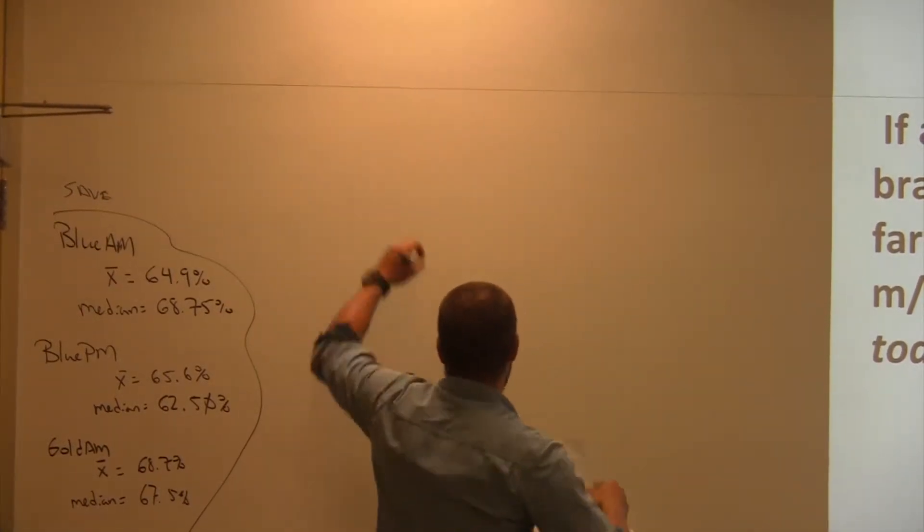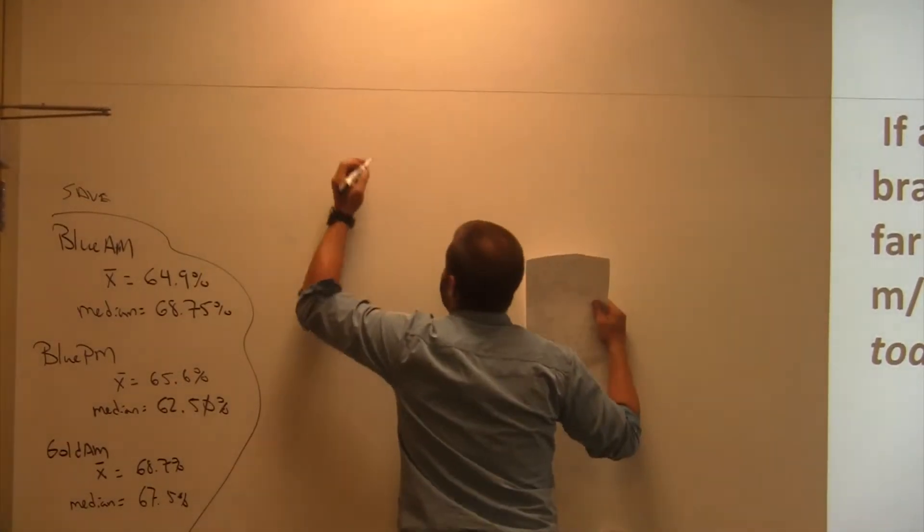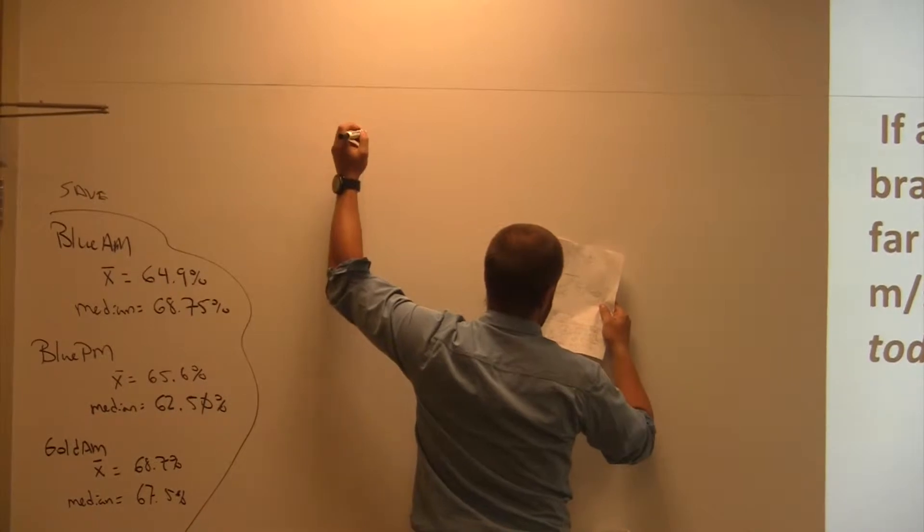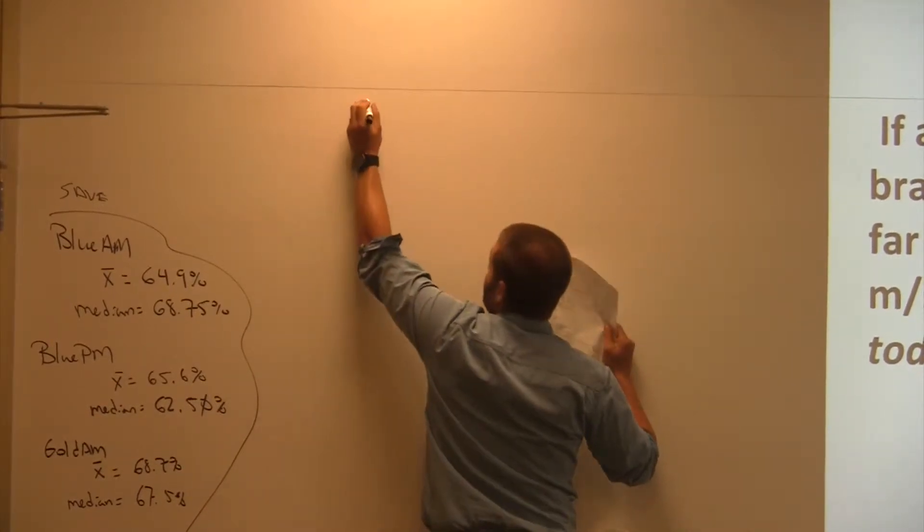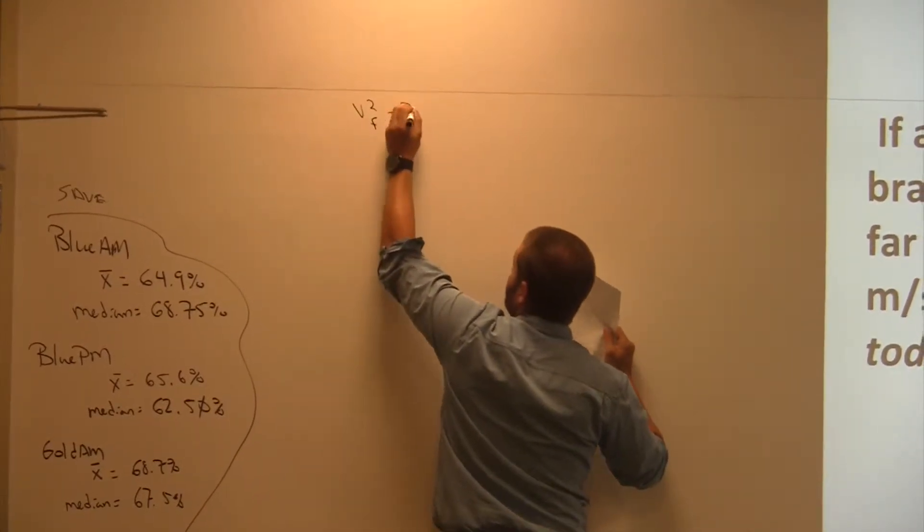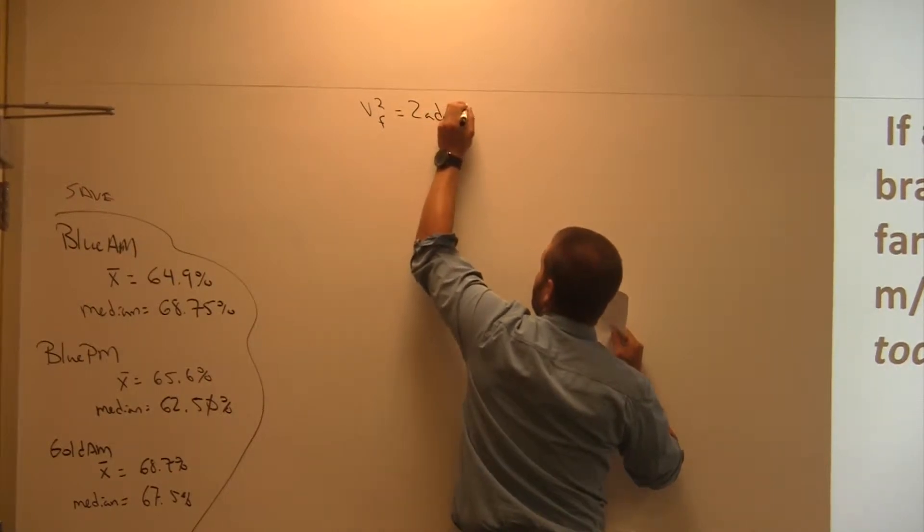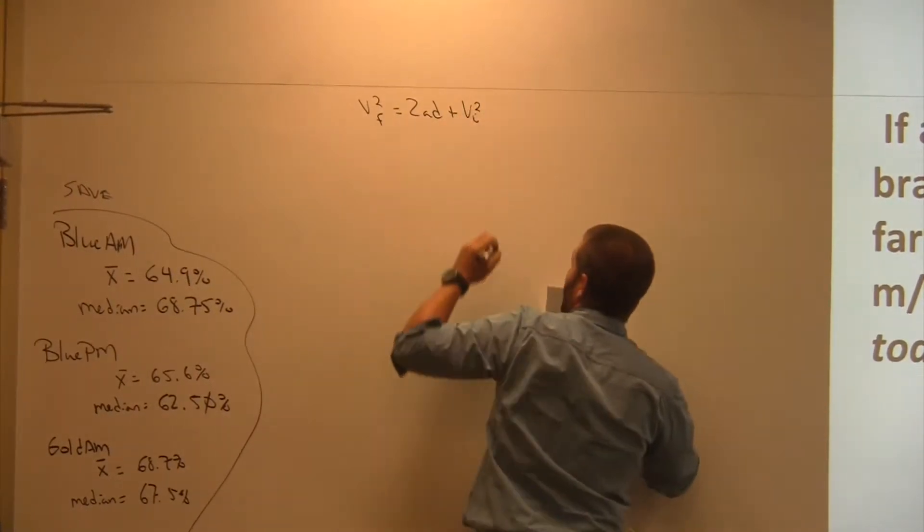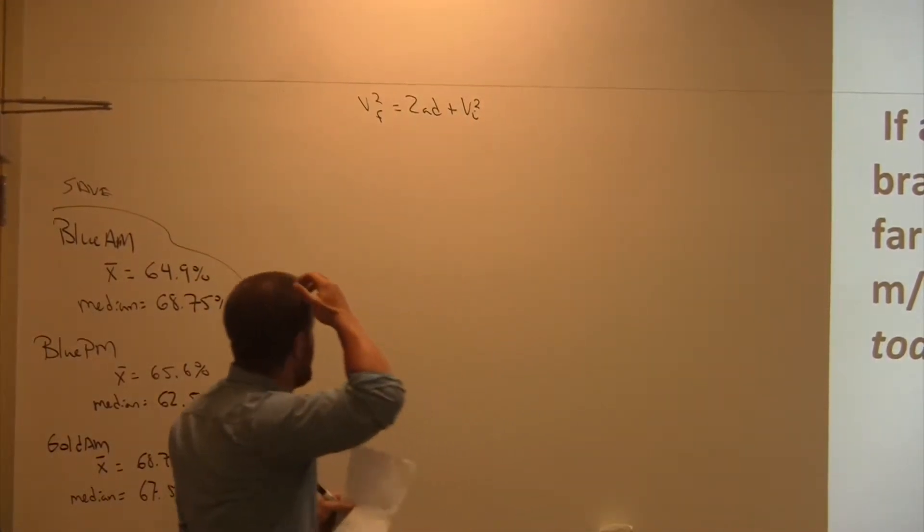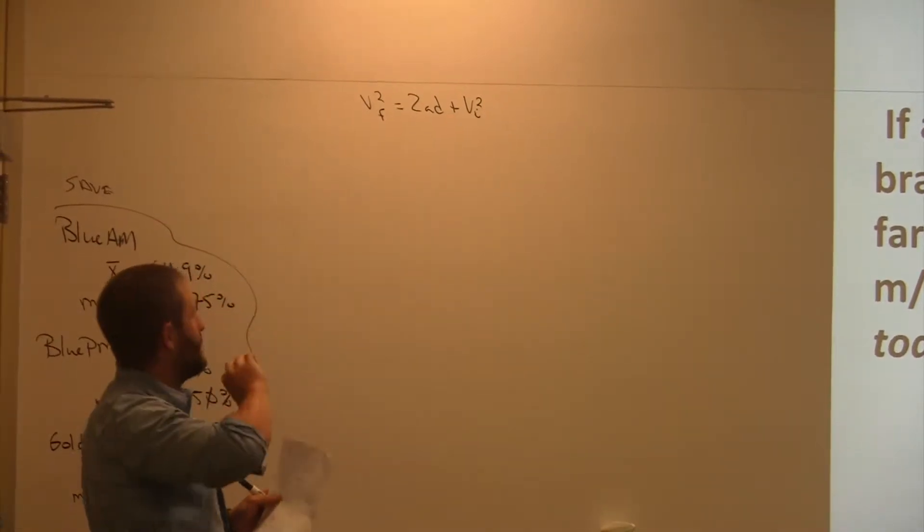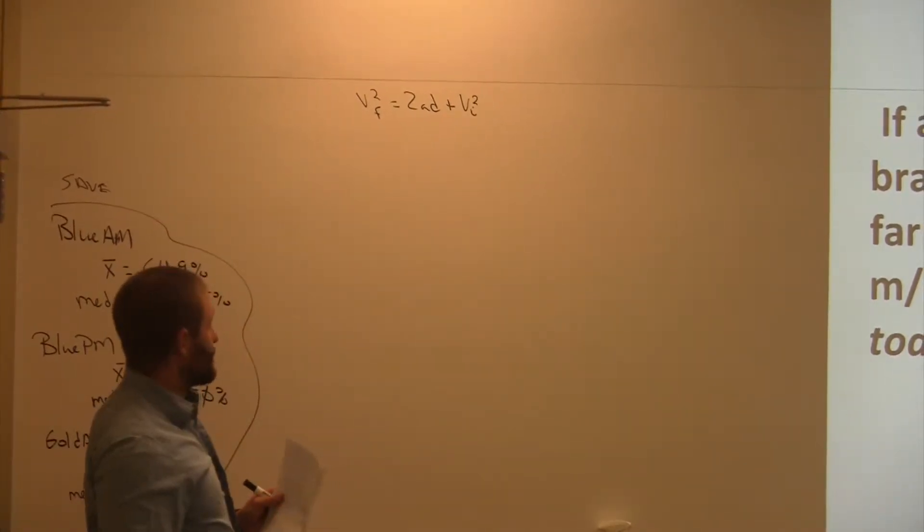Now, here's the equation that we're going to use. Look at this. This is fancy. Alright, the final velocity squared equals 2AD plus the initial velocity squared.